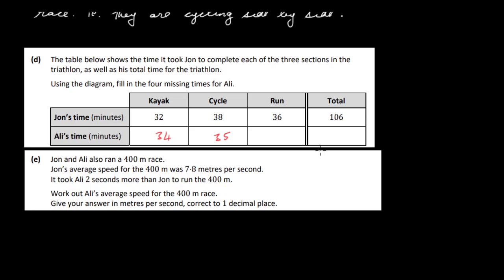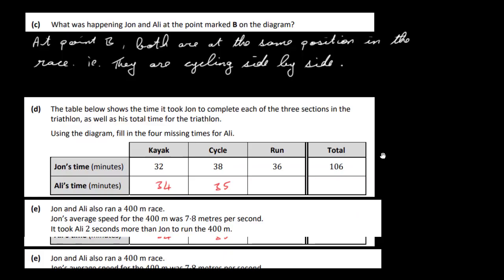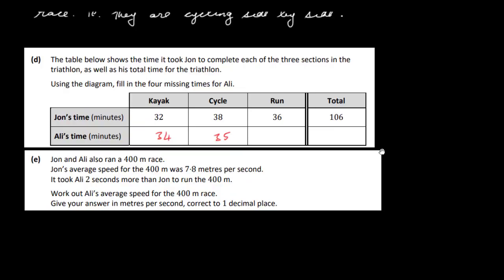Now the run then is the last section. So let's have a look at the run. OK, so during the run section, Ali was one minute ahead of John and finished one minute ahead of John. So therefore John and Ali both took the same time to complete the run section of the triathlon. So that's not going to change. This is going to be 36. OK, so let's add those three together. You get 6 and 5, 11, 5, 3, 4, 5, 6, 7, 8, 9, 10, 1, 0, 5. So that's the three times and the total time as well.